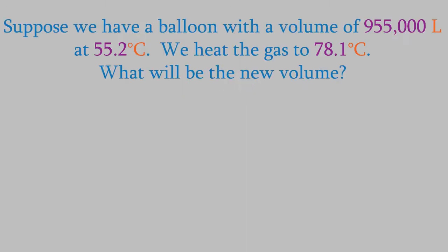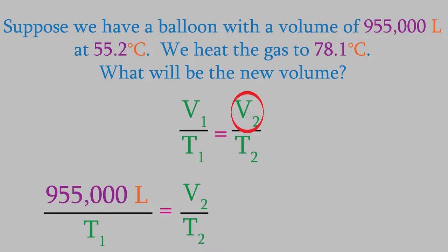For example, suppose we have a hot air balloon with a volume of 955,000 liters at a temperature of 55.2 degrees Celsius, and we then increase the temperature using a flame to 78.1 degrees Celsius. What will be the new volume of the balloon? We'll use Charles' Law to find the answer. We're looking for V2, so we'll just plug our data into the other variables. But remember, we need to use Kelvin for the temperature. Celsius will give us the wrong answer.